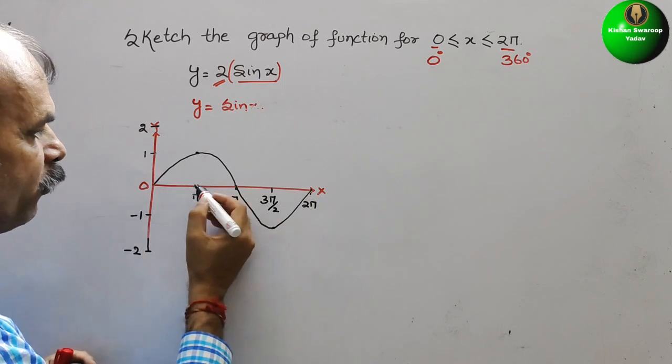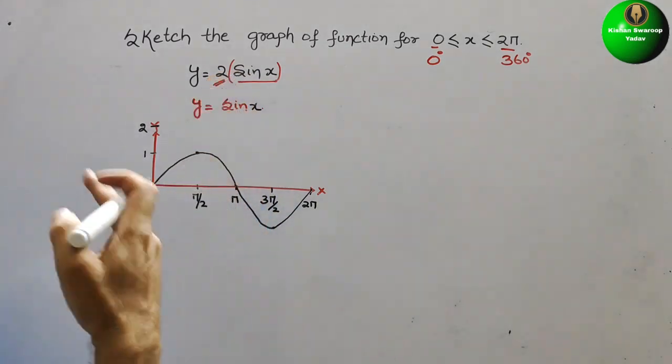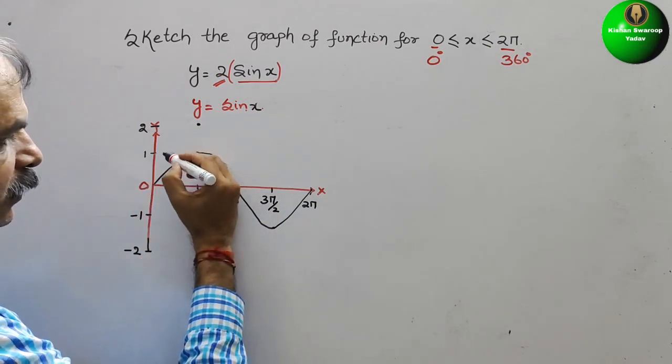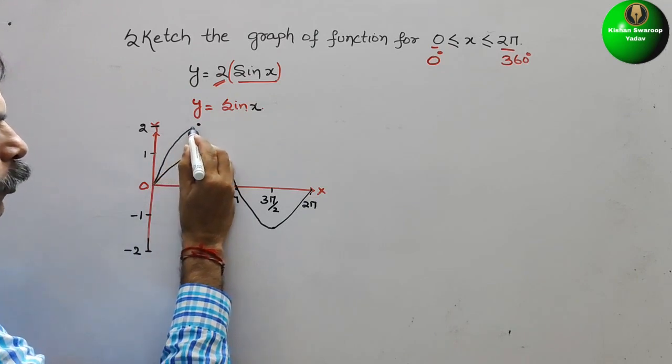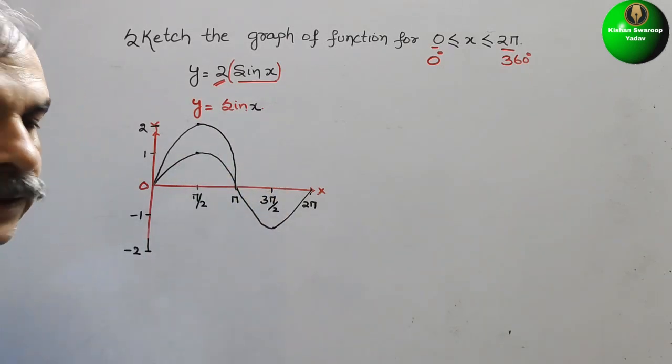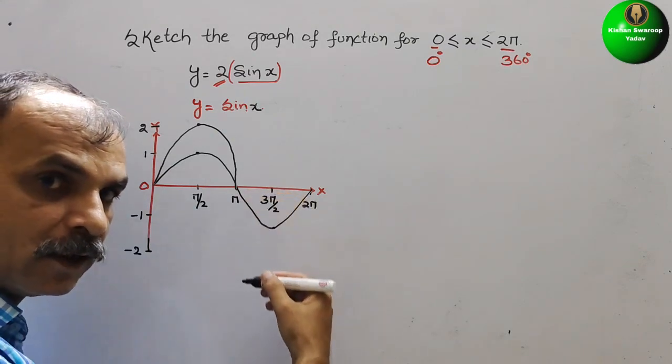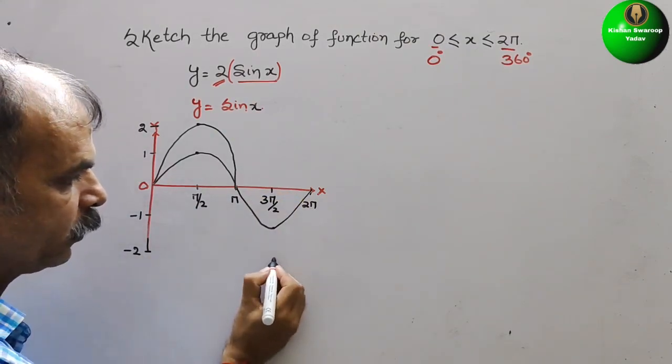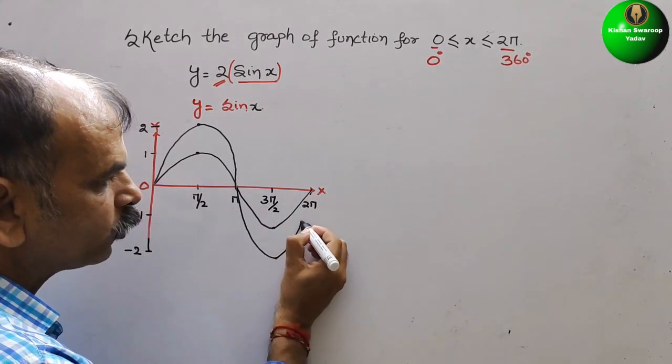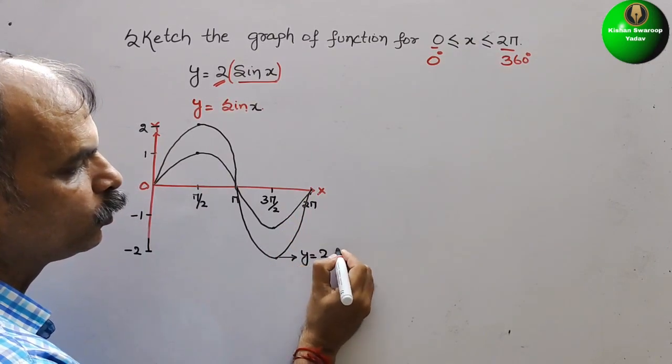Remaining same. So now it is 1. So 1 into 2 is 2. So here at 90 degrees, it will go up to 2 here. And see this. Now it will go from here up to 2. At 90 degrees, again it will return to your 0 at 180 degrees. Then at 3π by 2, it will go to minus 2 here. And at 2π, it will return back to 0. So this graph is your y is equal to 2 sin x.